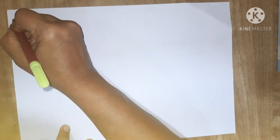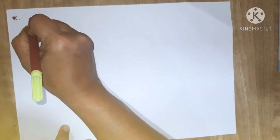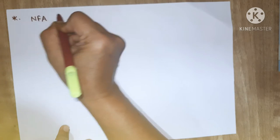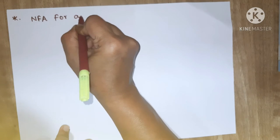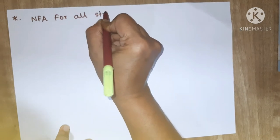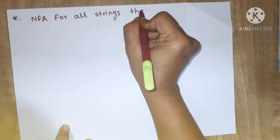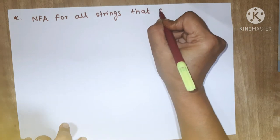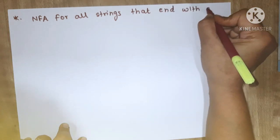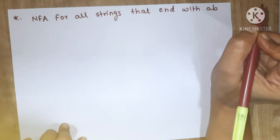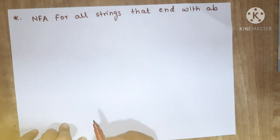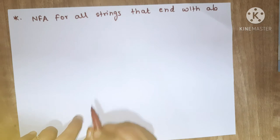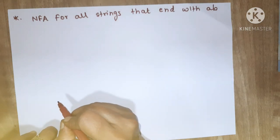Hello students, welcome to the video lectures on theory of computation. Today we are going to see the next problem of NFA. In the last lecture we saw NFA for strings that start with AB. Now we will see NFA for all strings that end with AB.